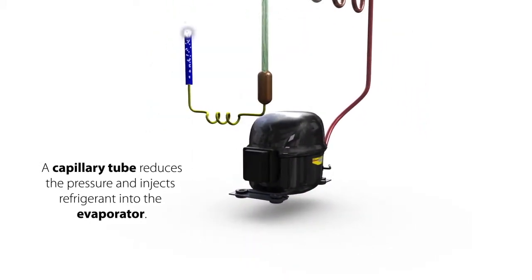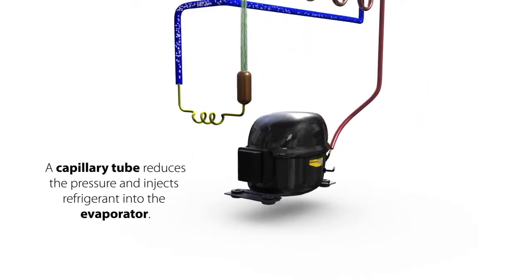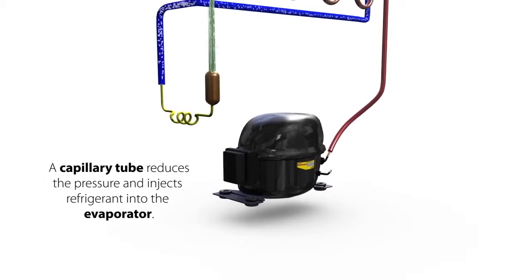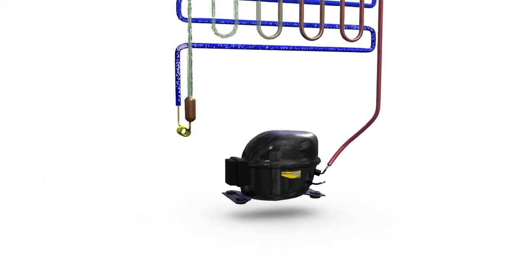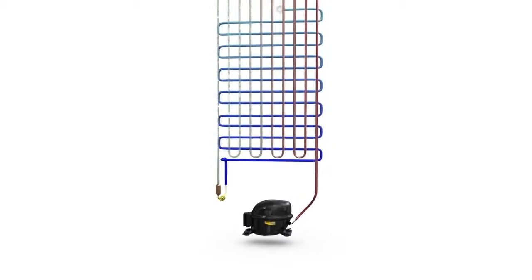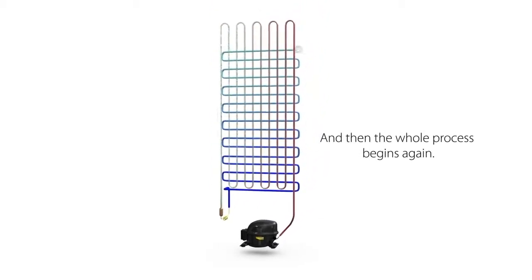A capillary tube reduces the pressure and injects refrigerant into the evaporator. And then the whole process begins again.